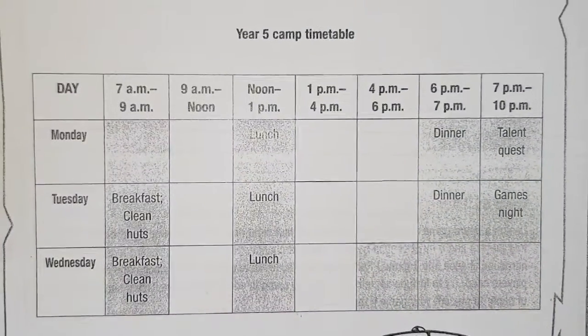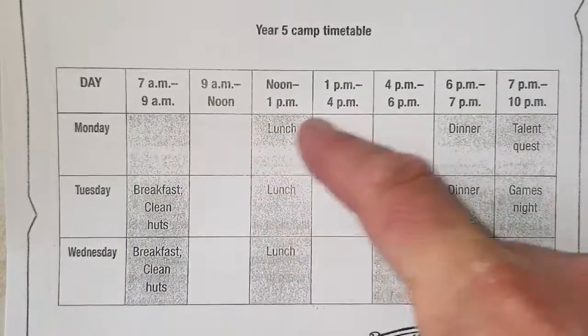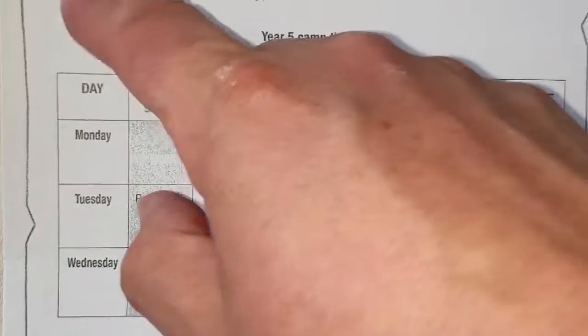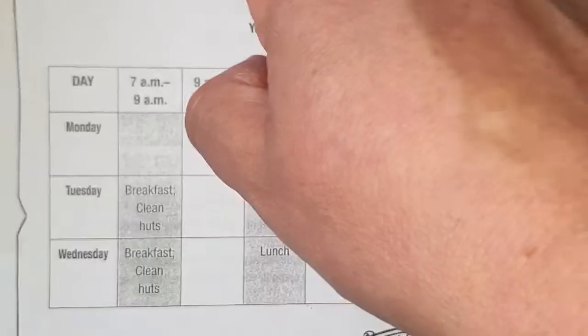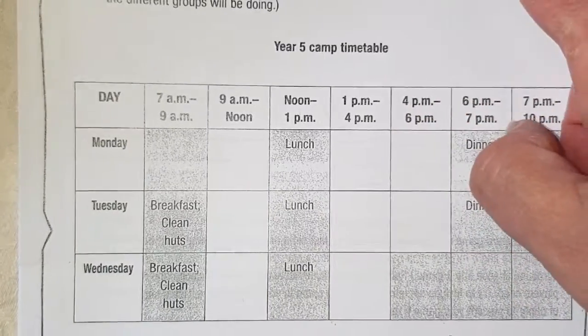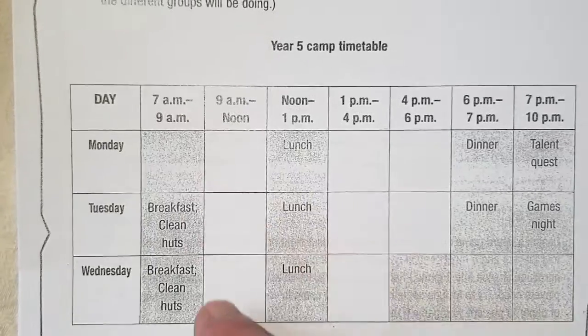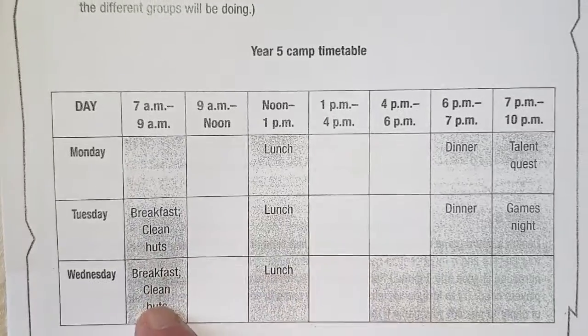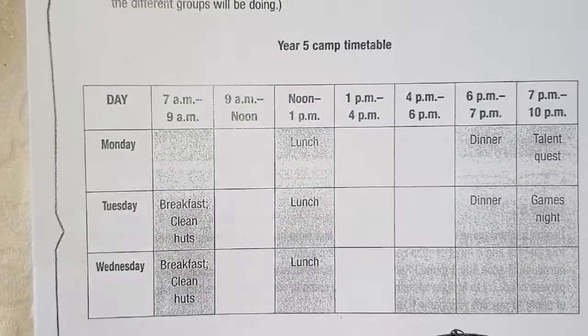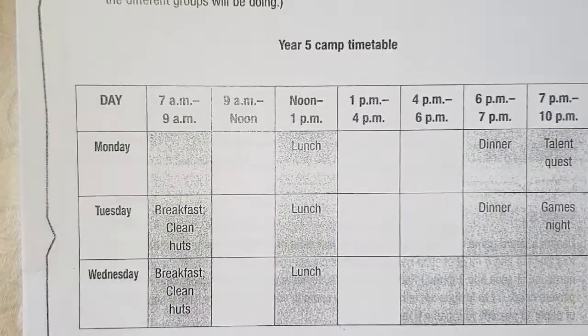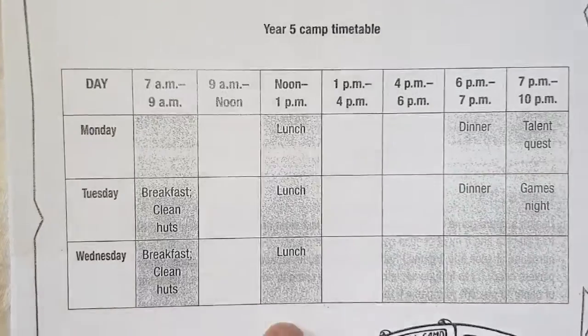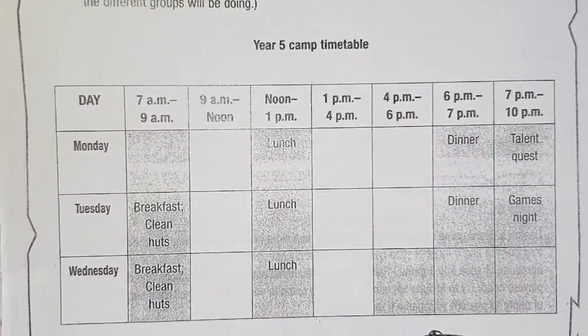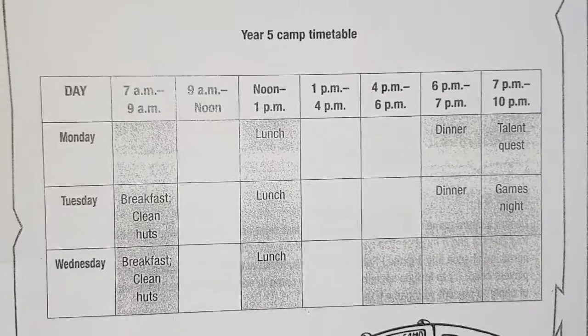The next page is where you fill out the timetable. There are four activities: orienteering, canoeing, completing an adventure course, and cubby building. You've got to fit those activities into the empty spaces in the timetable — the grayed-out spaces are already used. Decide a name for each group; it could be simple like orange, blue, yellow, green, or something like the crazy adventurers, the wonderful adventurers, and so on.